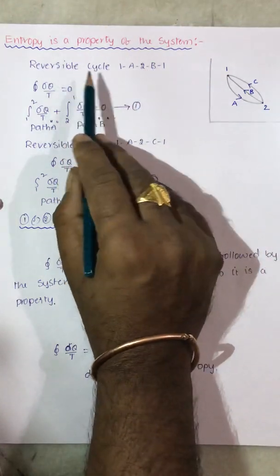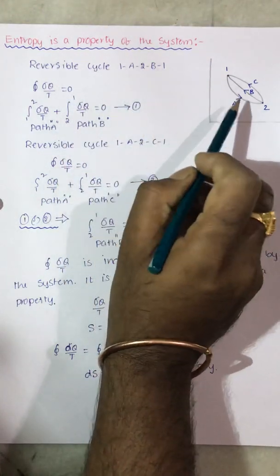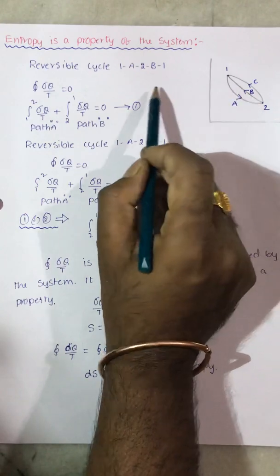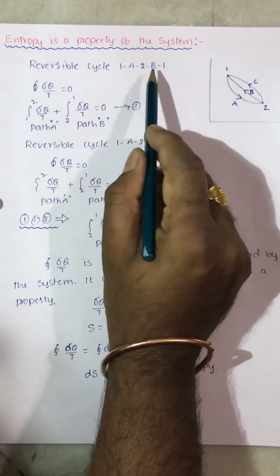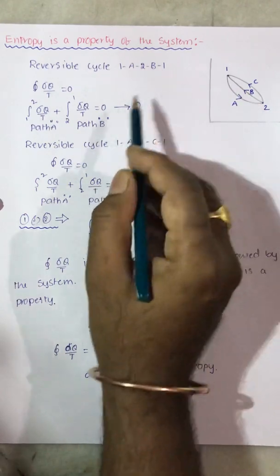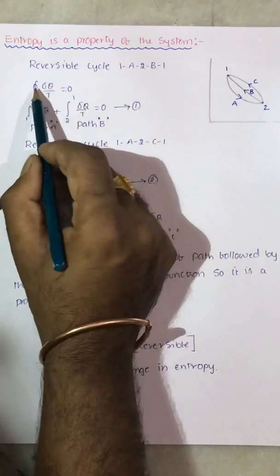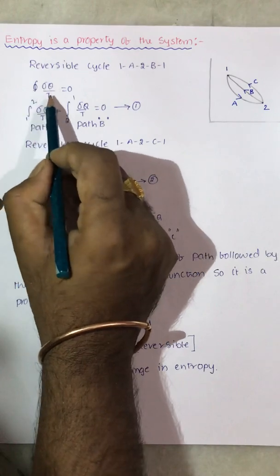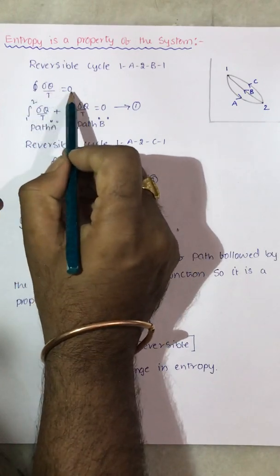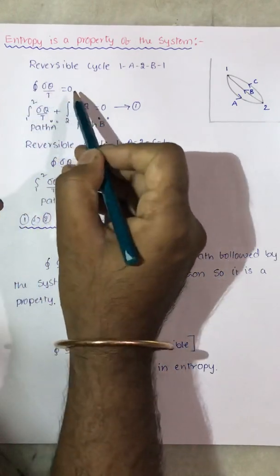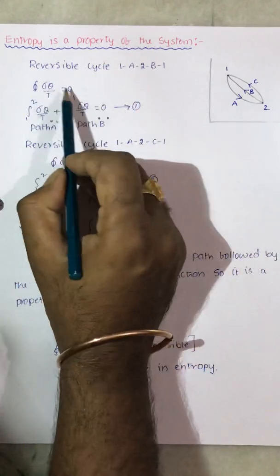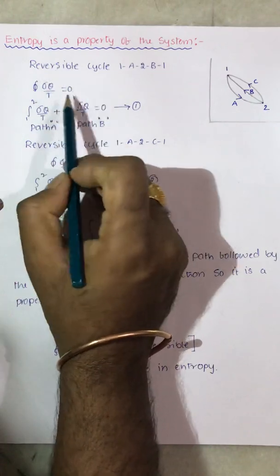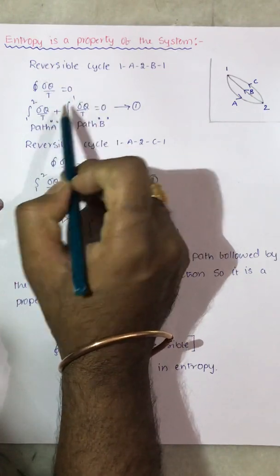Now let us see that 1A2B1 is the reversible cycle. For a reversible cycle, the cyclic integral of δq/T is equal to 0. If it is an irreversible cycle, it is less than 0.